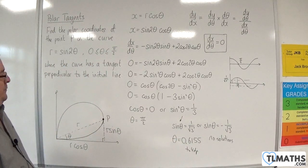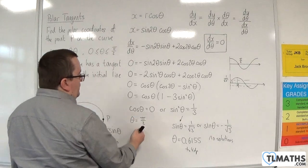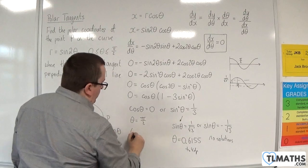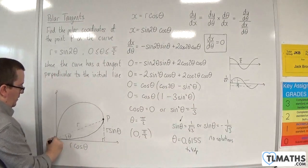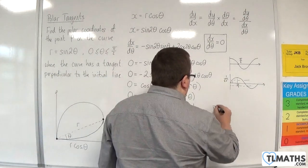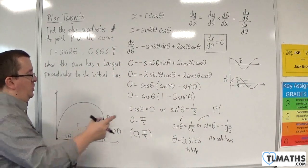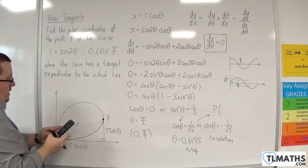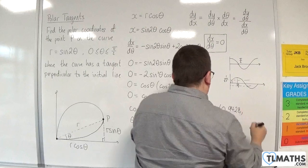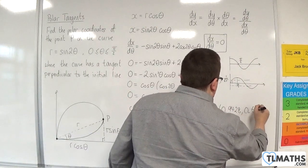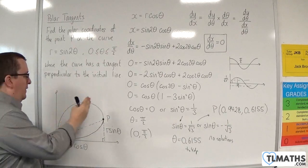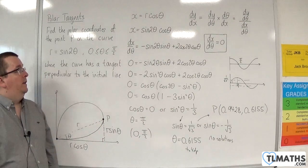We want the polar coordinates of point P. At θ = π/2, r = sin(2 · π/2) = sin(π) = 0, giving the point (0, π/2), which is not the point of interest. So P comes from θ ≈ 0.6155. Substituting back: r = sin(2 × 0.6155) ≈ 0.9428 (4 d.p.). Therefore the polar coordinates of point P are approximately (0.9428, 0.6155), where the curve has a tangent perpendicular to the initial line between 0 and π/2.